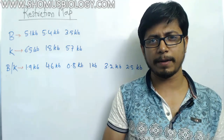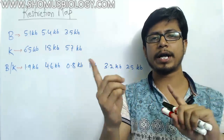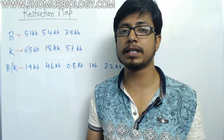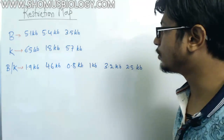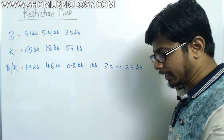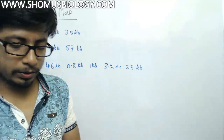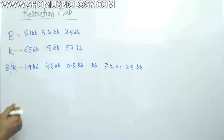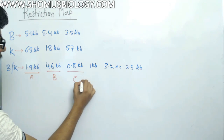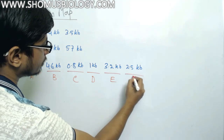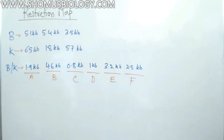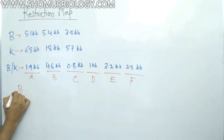For a linear DNA, drawing a map isn't difficult because you have left and right terminal sites. But for circular DNA there is no terminal site — it's all cyclized. So we use the same rule as before. Label the six fragments from the double digest: A, B, C, D, E, and F.